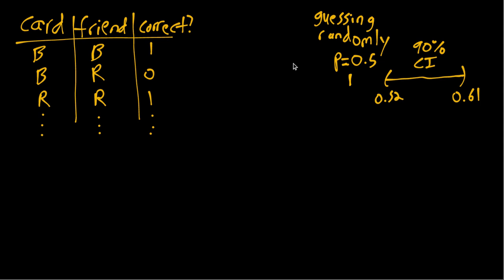Now in this case, since there's two options, black or red, if you were to just guess randomly, you would get it right with probability one half. So the true population probability in this case would be equal to 0.5. So we'll mark that over here with this line, and then imagine after you go and compute your confidence interval, it's actually from 0.52 up to 0.61.